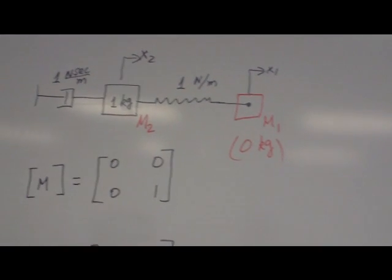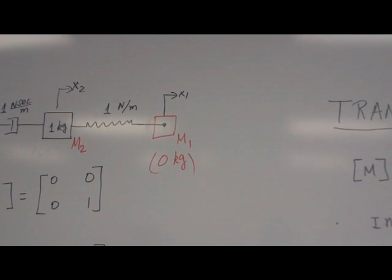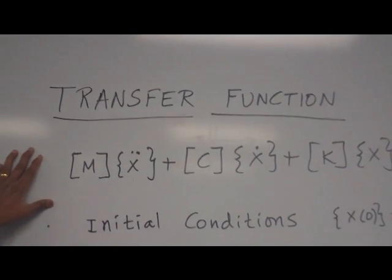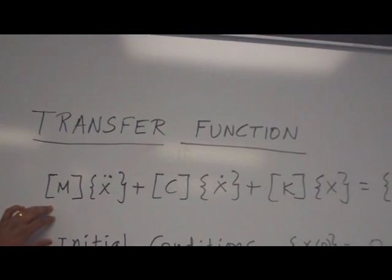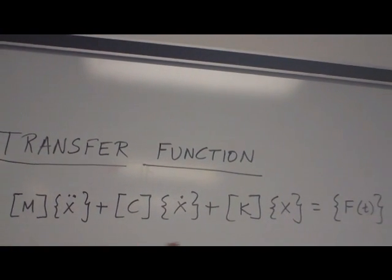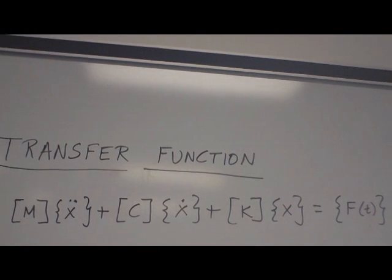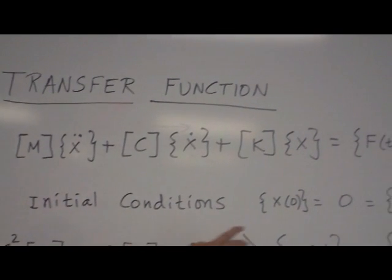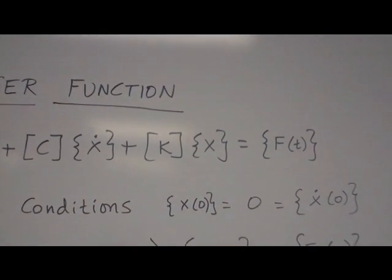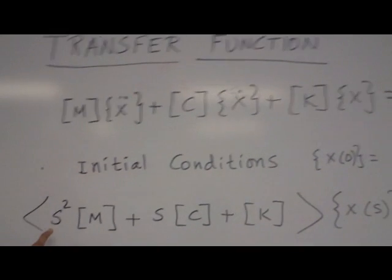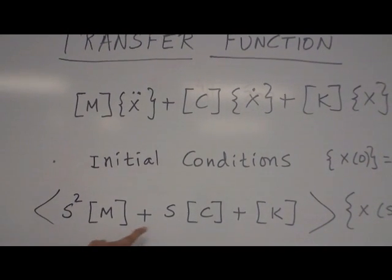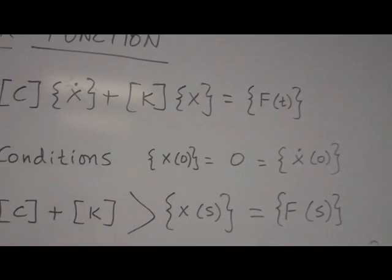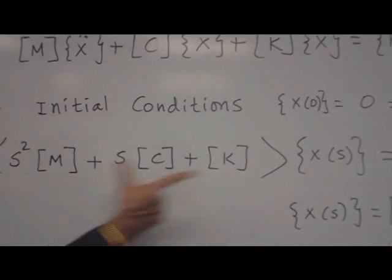Now once you have these equations, it is easy to find the transfer function, which is very useful in the controls system course. So this is your dynamic equation of motion. Mx double dot Cx dot Kx equal to f of t. For transfer function, always initial conditions are 0. So x of 0, 0. X dot of 0, 0. Now take the Laplace transform. You have S square M plus S times C plus Kx of S equal to f of s.